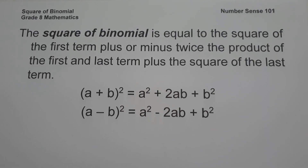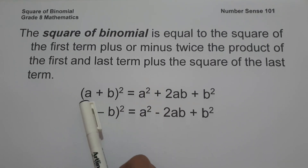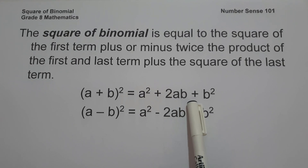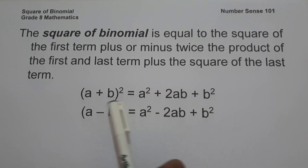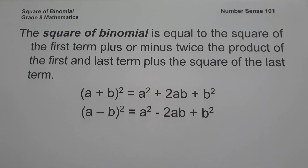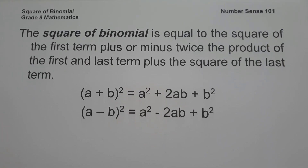For example, if we have the quantity (a + b) squared — a plus b is an example of a binomial, and a binomial is a polynomial with exactly two terms. To simplify (a + b)², we take the first term squared, that is a², plus 2 times a times b, that is 2ab, plus the square of the last term, b². So (a + b)² = a² + 2ab + b². Similarly, (a - b)² = a² - 2ab + b². Always remember, the square of a binomial is always a perfect square trinomial.